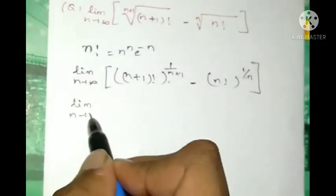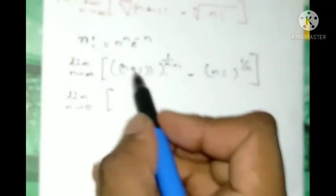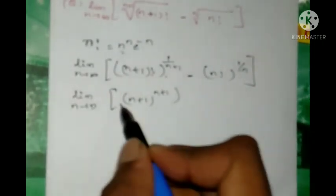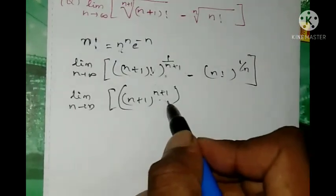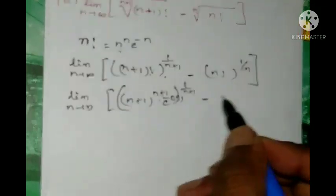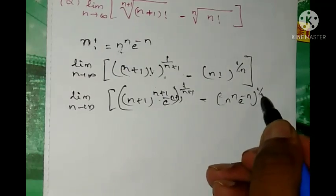We substitute this result. Limit n tends to infinity - in place of n factorial we substitute (n+1) to the power of (n+1) times e to the power of minus (n+1), whole to the power of 1/(n+1), minus n to the power of n times e to the power of minus n, whole to the power of 1/n.